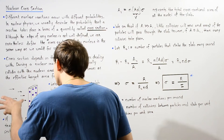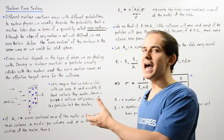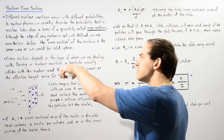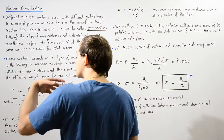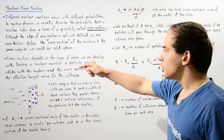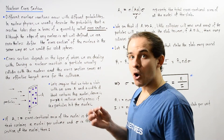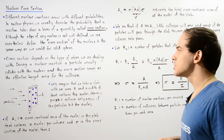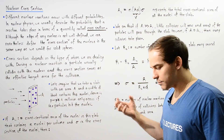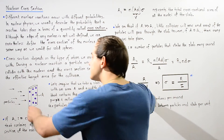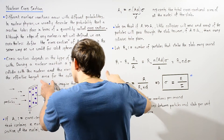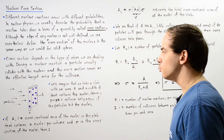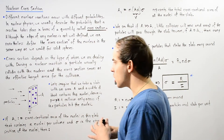Cross-section depends on the type of atom that we are dealing with — basically, the larger the atom, the greater the cross-section. During a nuclear reaction, a particle usually collides with the nucleus, and the cross-section of that nucleus serves as the effective target area for our collision and for our nuclear reaction.